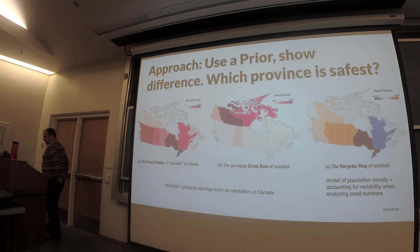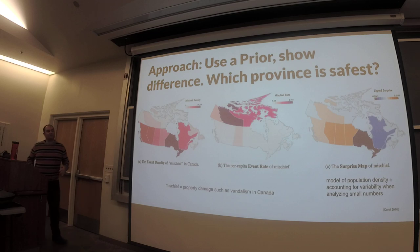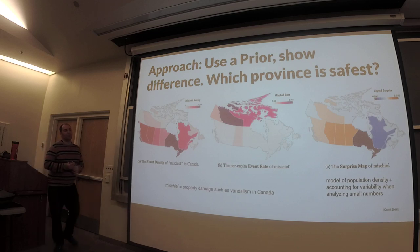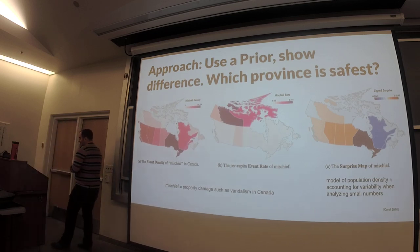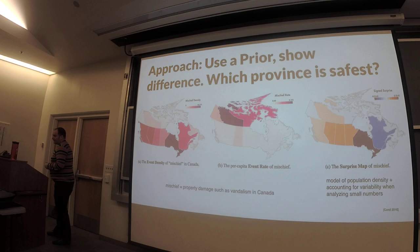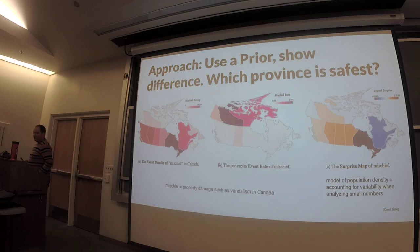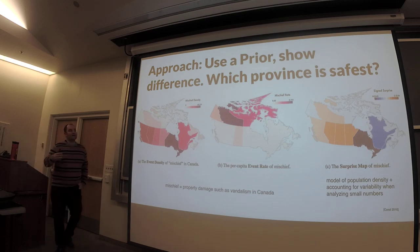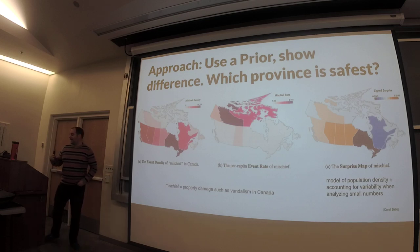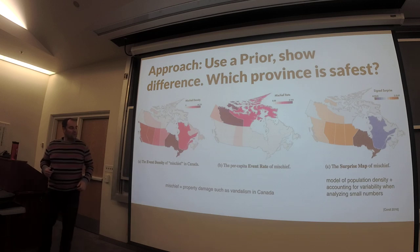One approach I really like, especially if you have something like dense or very sparse population, is from a paper by Michael Correll and Jeff Hare. They call these surprise maps. The idea is kind of like a Bayesian approach — they use a prior and then show the difference between this prior and what you actually see in the data.